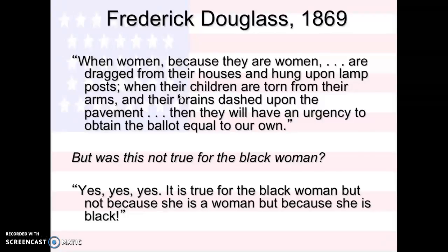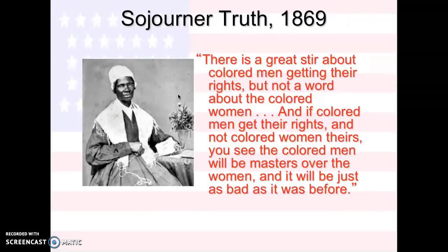So basically, you're going to see a split in the movement. One famous person, Sojourner Truth, in 1869 — she was a big abolitionist, but she was also for women's suffrage. I do want you to write her words down or sum them up: 'There's a great stir about colored men getting their rights, but not a word about the colored women. And if colored men get their rights and not colored women theirs, the colored men will be masters over the women, and it will be just as bad as it was before.' Write that, but sum it up in your own words. Make sure you know Sojourner Truth said that.